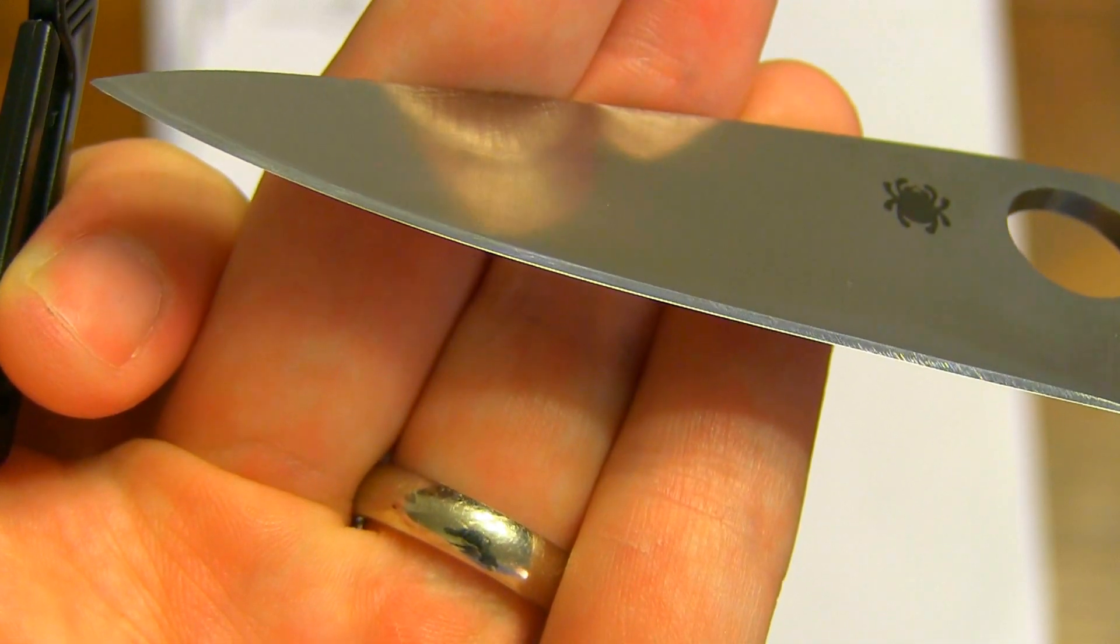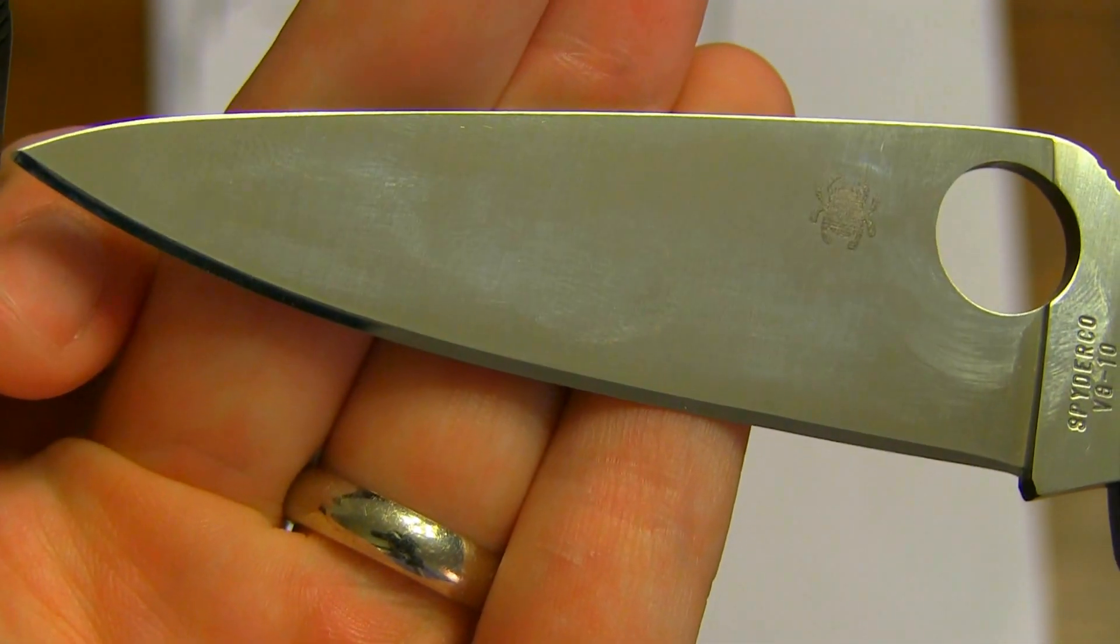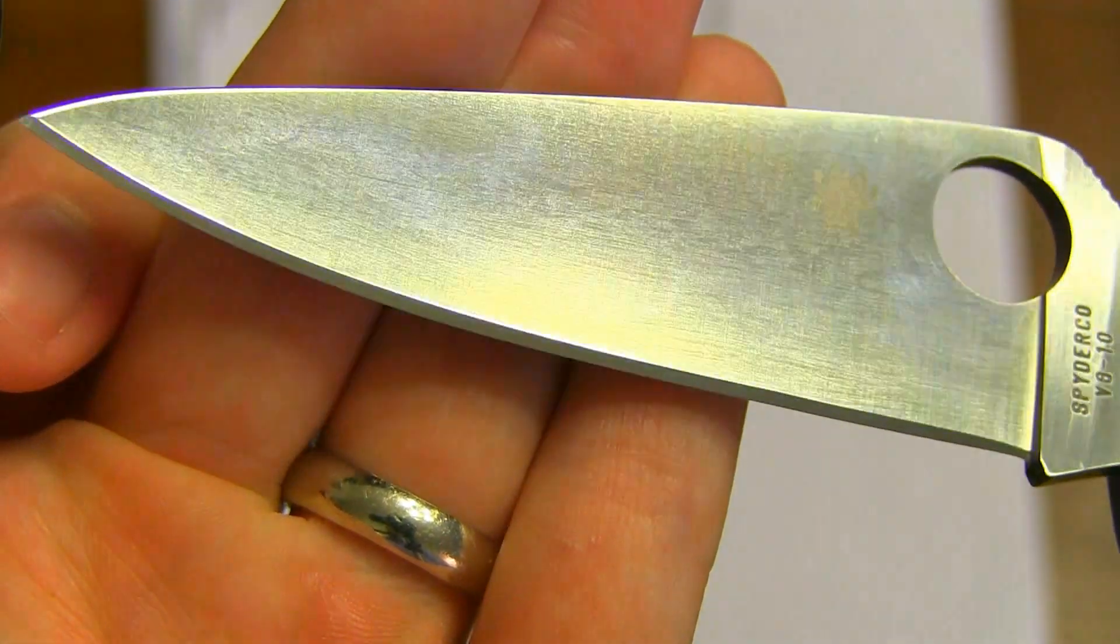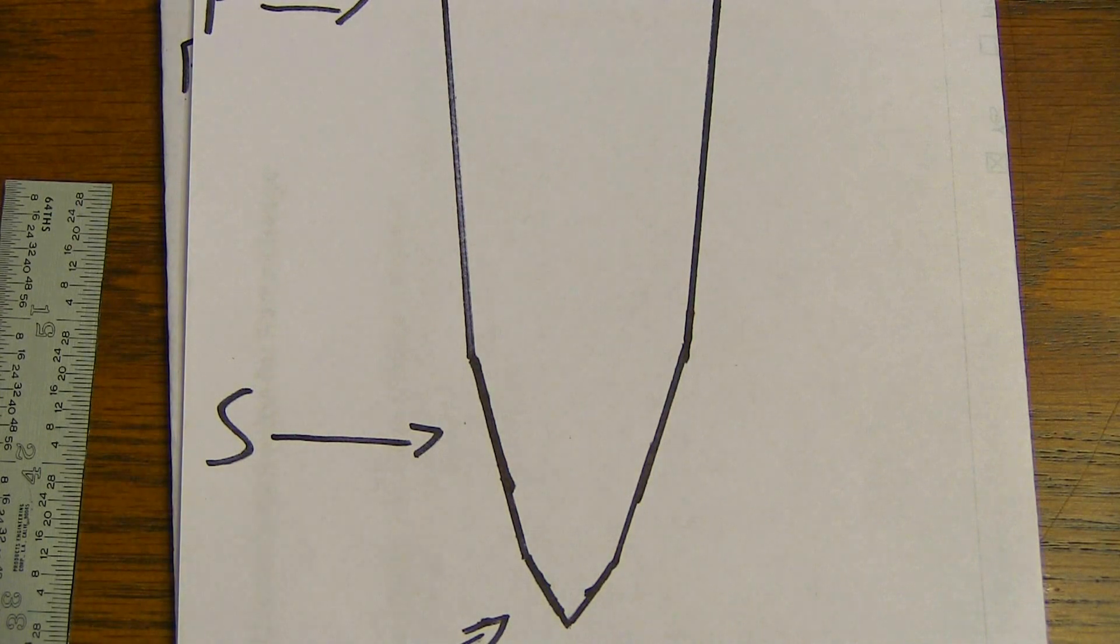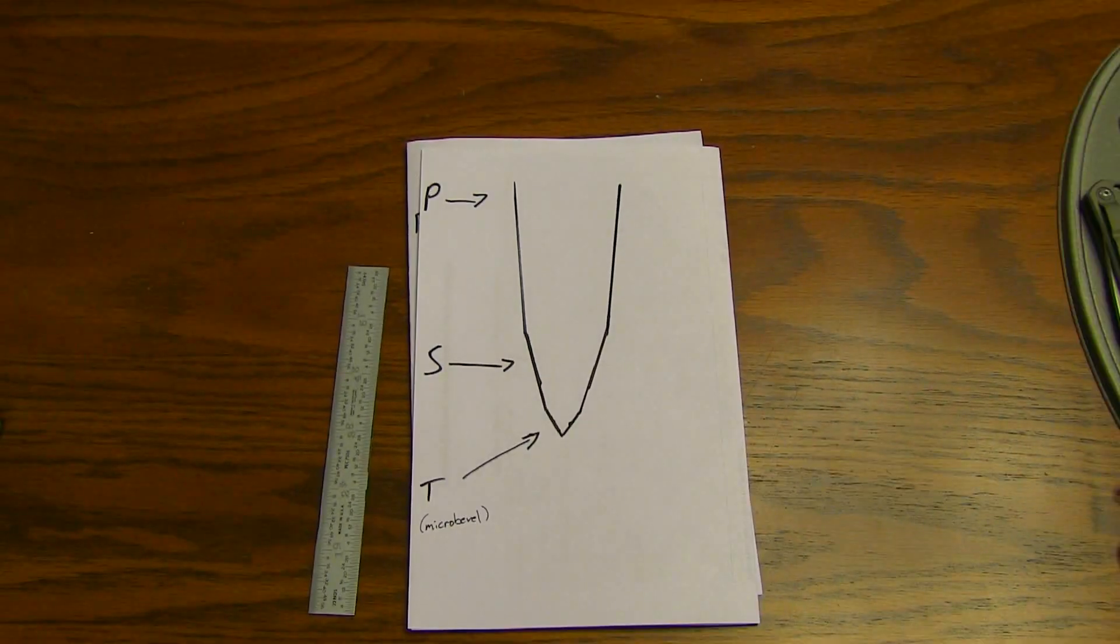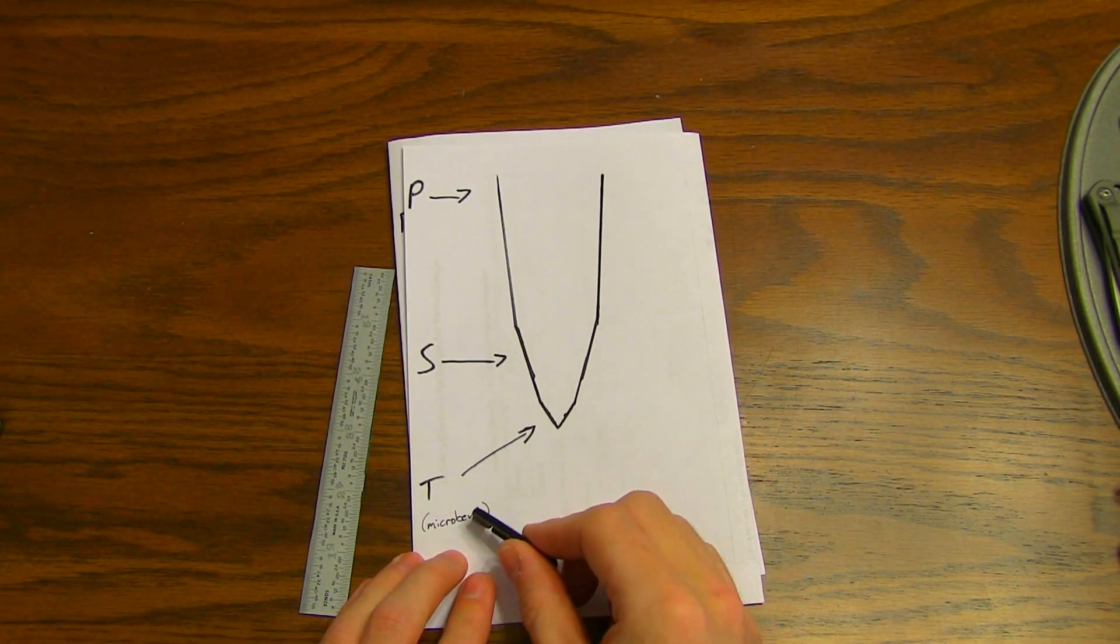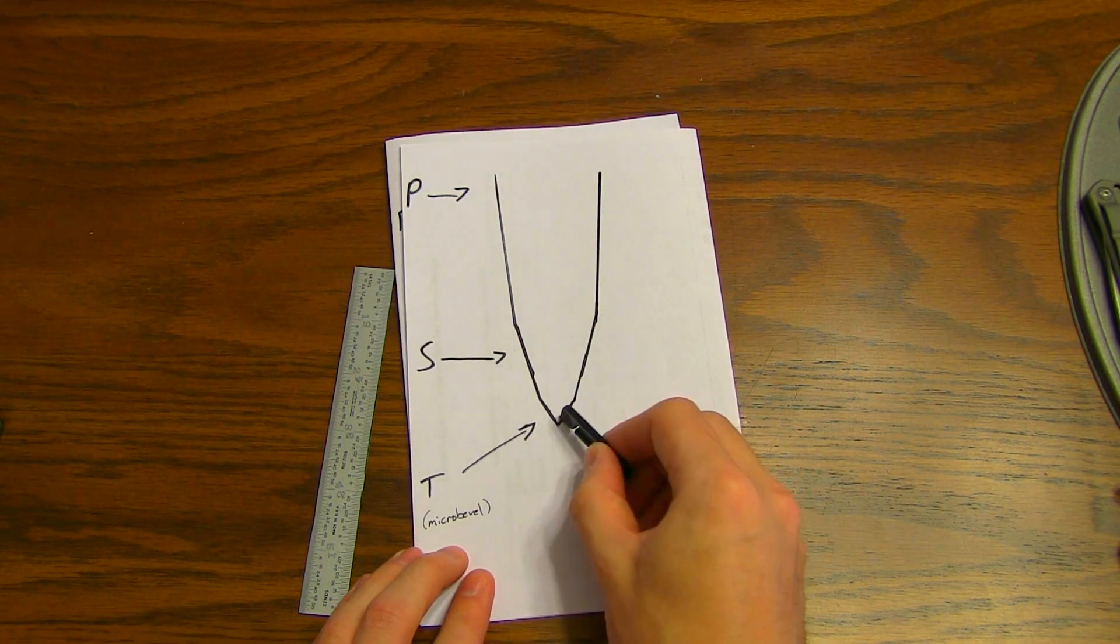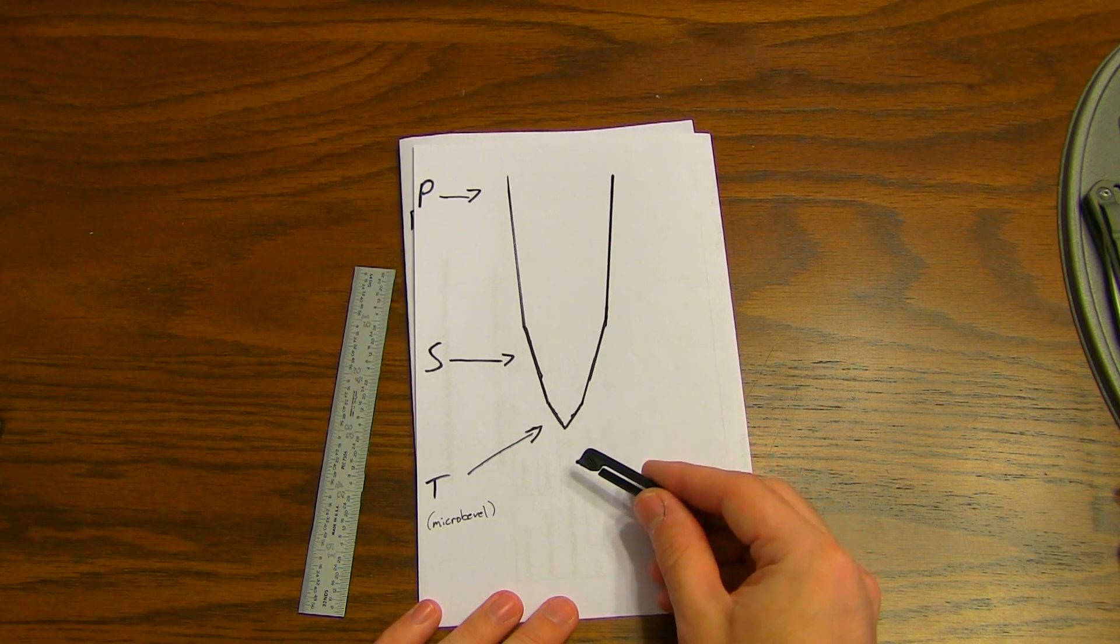Alright, that's what a micro bevel looks like. This edge without a micro bevel would dent and roll pretty bad. It's a shallow edge, about 28 degrees inclusive, so it's not very strong. Without a micro bevel, this tertiary bevel, aka the micro bevel, adds a lot of strength without sacrificing much of that cutting performance.